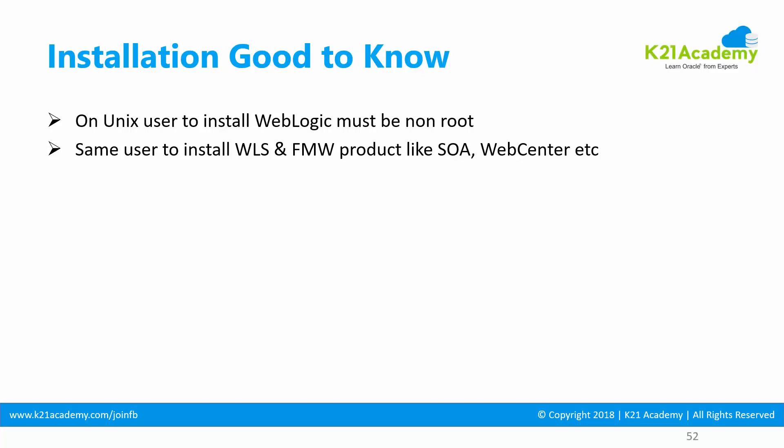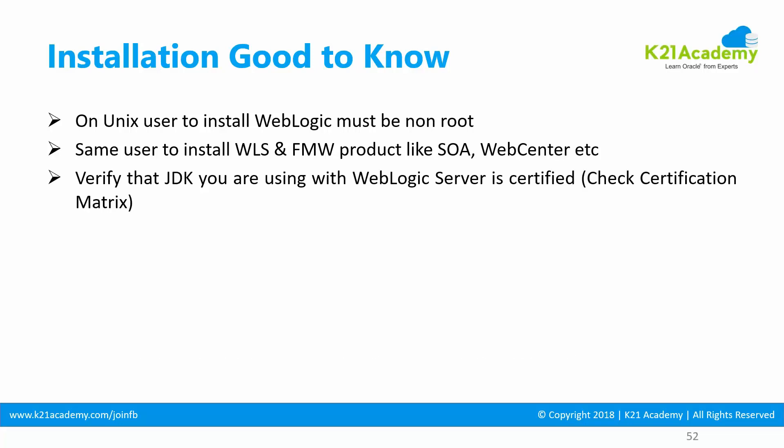Products like SOA and Oracle Access Manager use Coherence. Also, when installing WebLogic and Fusion Middleware components, make sure you install both using the same OS user. Additionally, WebLogic requires JDK to be already installed, and make sure the JDK version you plan to use is certified with the WebLogic server version. There is a certification matrix available for this.